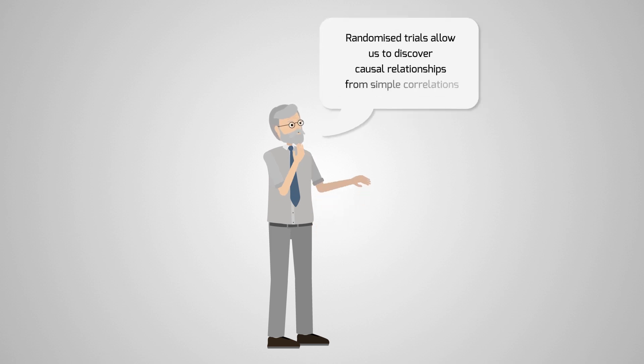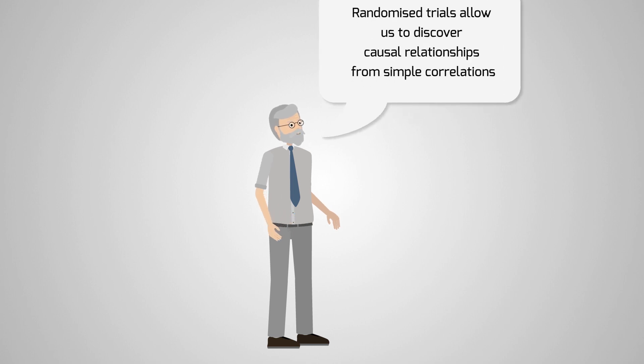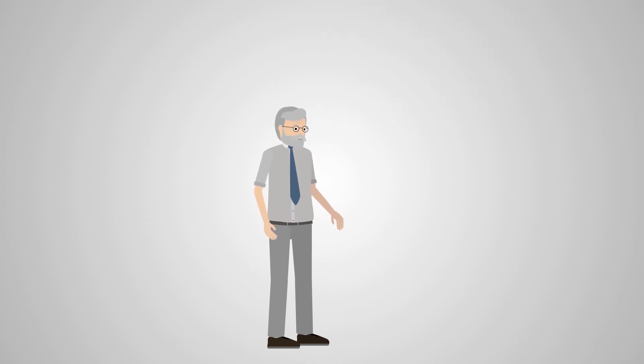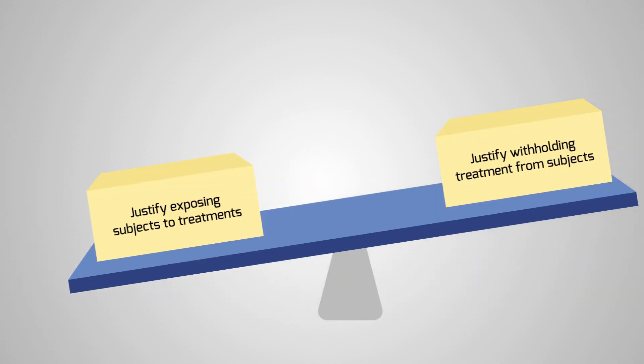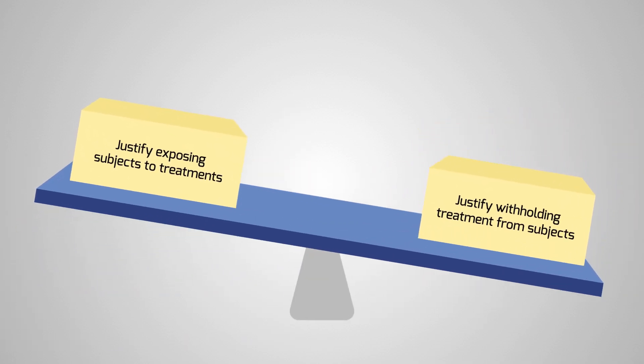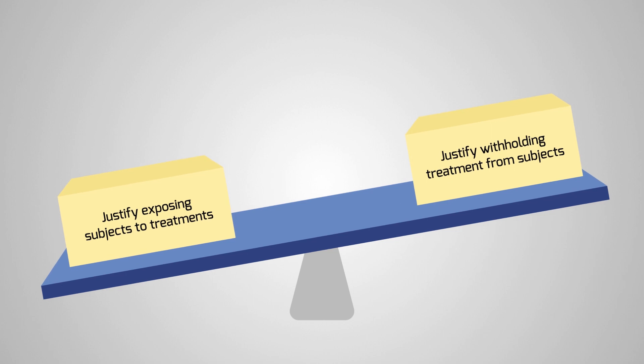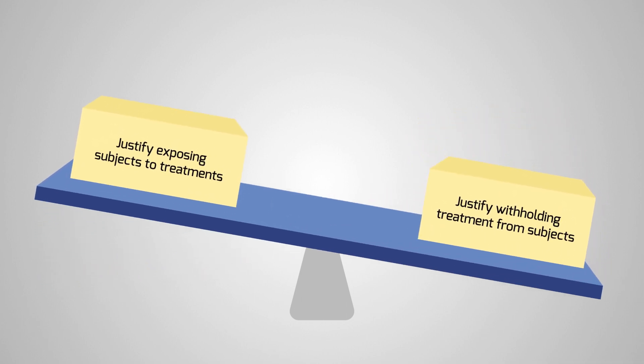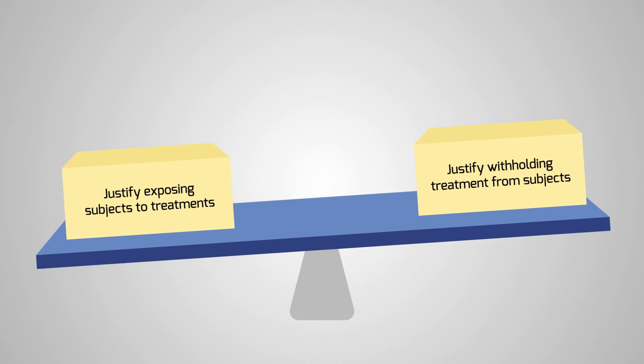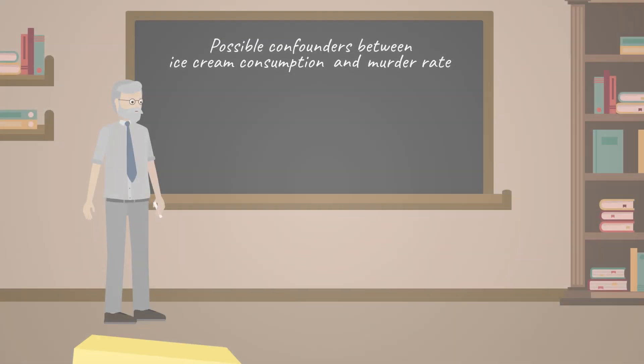The power of randomized trials is that they allow us to discover causal relationships from simple correlations, as long as we control the experimental setting. However, randomized trials aren't always easy or ethical to run. For example, it's unethical to conduct a trial in which people are forced to smoke a certain number of cigarettes to check whether they cause lung cancer.